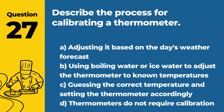Question 27. Describe the process for calibrating a thermometer. Answer: B. Using boiling water or ice water to adjust the thermometer to known temperatures. This ensures that the thermometer provides accurate readings for safe food preparation.